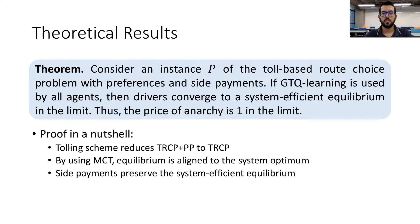Together, our previous theoretical analyses lead us to our main theorem. Basically, this theorem states that by using our algorithm, agents converge to a system-efficient equilibrium. In the limit, this translates into a price of anarchy of 1. The theorem is proven by showing that our algorithm reduces the toll-based route choice problem with preferences and side payments to the original toll-based route choice problem. Moreover, since our algorithm employs marginal cost tolls, the equilibrium is aligned to the system optimum. Furthermore, these observations remain unaffected by the side payments.